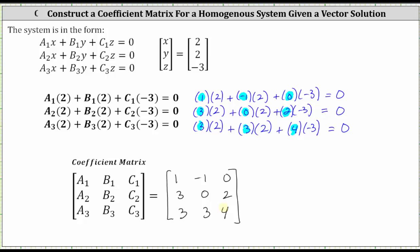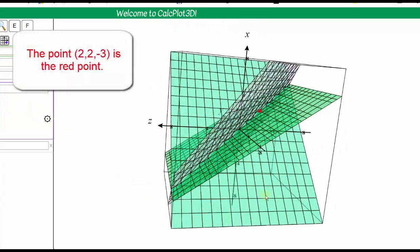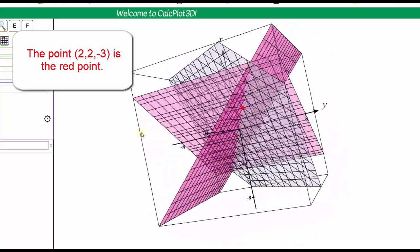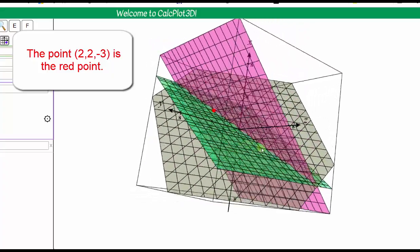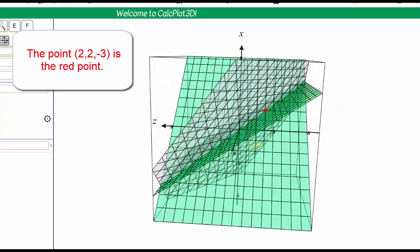Before we go, let's graph the three equations as well as the point two, two, negative three, to make sure the point is on all three planes. The first row gives x minus y equals zero; the second row gives three x plus two z equals zero; and the third row gives three x plus three y plus four z equals zero. Looking at the graph, notice how the point two, two, negative three is on all three planes, and therefore it is a solution to the system.